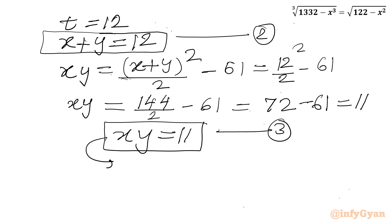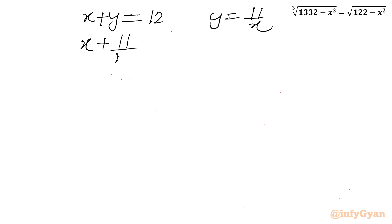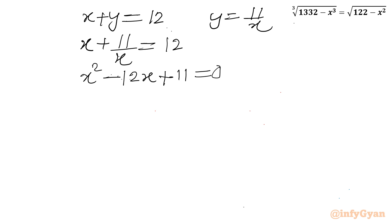From equation 3, y equal to 11 over x (since x is not equal to 0). Substituting into x plus y equal to 12 gives x plus 11 over x equal to 12, which leads to x squared minus 12x plus 11 equal to 0. Using factorization, this factors as (x minus 1)(x minus 11) equal to 0, giving x equal to 1 or x equal to 11.